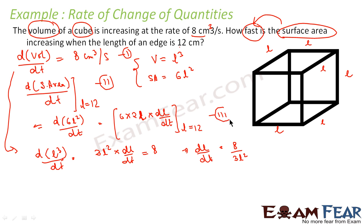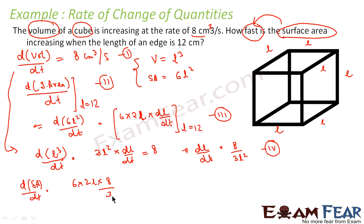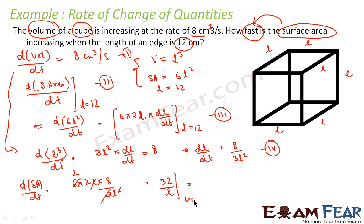Combining the equations: d(SA)/dt = 12l × (dl/dt) = 12l × 8/(3l²) = 32/l. With l = 12 cm, this gives d(SA)/dt = 32/12. So 32/12 is the answer.